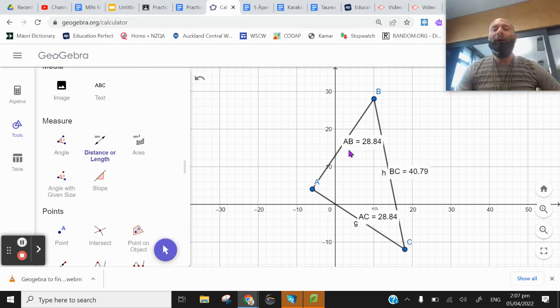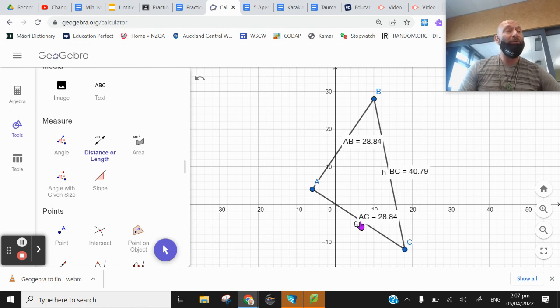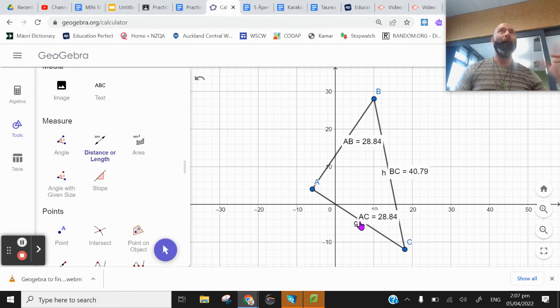Well now, since I know I've got two sides that are the same length, I have a special kind of triangle. What kind of triangle has two sides the same length? Isosceles. Rion knows. Good. So now you've identified it.